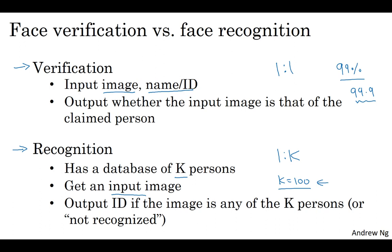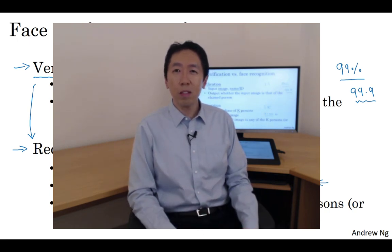What we'll do in the next few videos is focus on building a face verification system as a building block. And then if the accuracy is high enough, you'll be able to use that in a recognition system as well. In the next video, we'll start describing how you can build a face verification system. It turns out one of the reasons it is a difficult problem is you need to solve a one-shot learning problem. Let's see in the next video what that means.